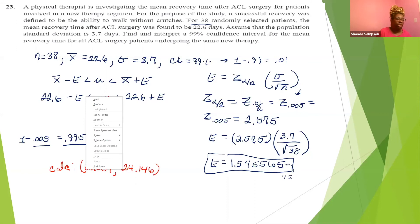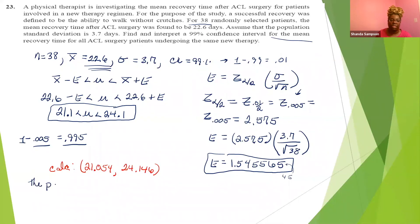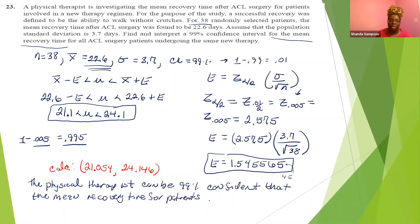So now you need to make sure that you put it in the right form, meaning you have the right number of decimal places showing in your final answer. Now you see that x bar is one decimal place. So we need to have our answer is 21.1 is less than mu is less than 24.1. The interpretation of this, the physical therapist can be 99% confident that the mean recovery time for patients using the new therapy after ACL surgery is between 21.1 and 24.1 days.